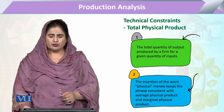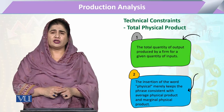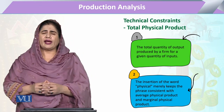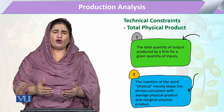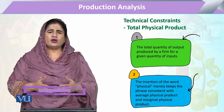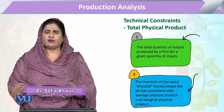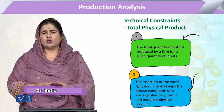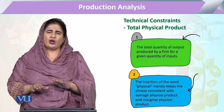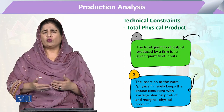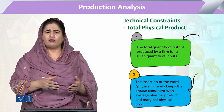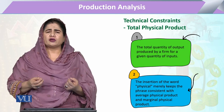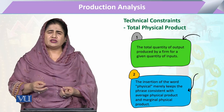This is a production analysis chapter and we are going to study the Total Physical Product. What do we mean by Total Physical Product? It is actually another name for the total product. Because we will also have terms like average physical product and marginal physical product, we add the word 'physical' for consistency, but in many books the total product and total physical product mean the same thing.